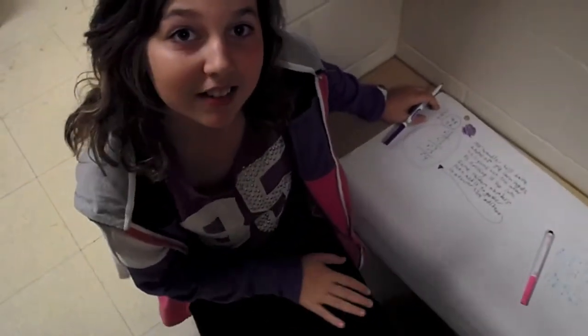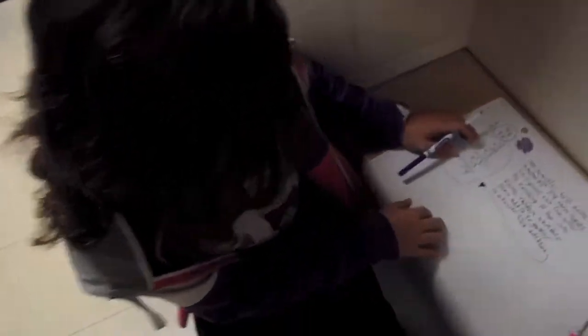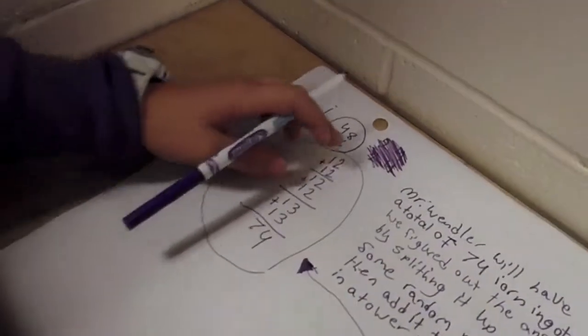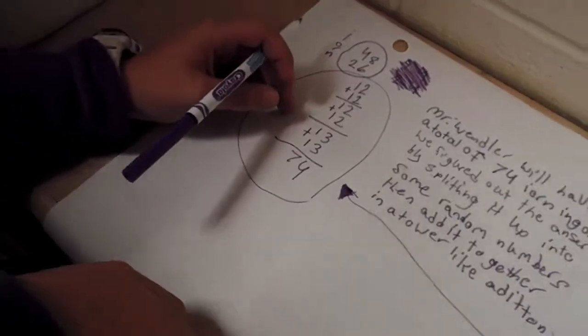So tell me how you're answering the question. First, I took the 48 and I split it up into 40 and 8 like here because they are friendly numbers. And then I went over to the 26 and I split it up. Although they were not friendly numbers, they were still easy to add. So I added them up to get the answer of 74.